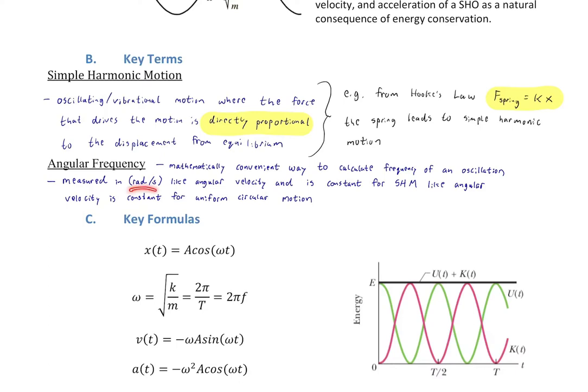Angular frequency is measured in radians per second — just like angular velocity — and is constant for simple harmonic motion (SHM), just as angular velocity is constant for uniform circular motion. It's a constant, unchanging value that describes the particular conditions of that simple harmonic oscillator.